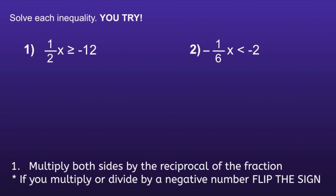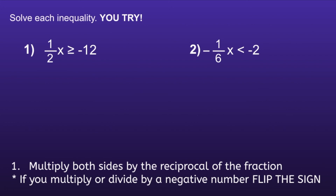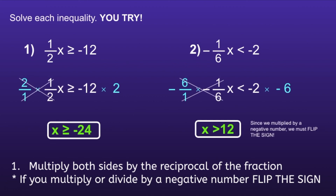Okay, now it's your turn to try it out. I have two inequalities on the screen I want you to solve for. I would recommend you pause the video, solve, and then resume when you're ready to see if your solutions are correct. Let's take a look! Number 1, the final inequality will be x is greater than or equal to negative 24. And number 2, the final inequality is x is greater than 12. Notice since we multiplied by a negative 6 in number 2, we did have to flip the sign. If you had either of these incorrect, I would recommend you go back, review your work, and see if you can find your mistake.